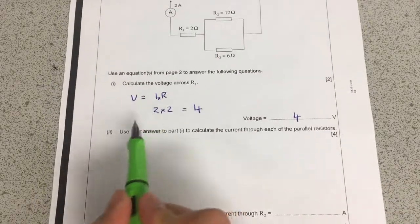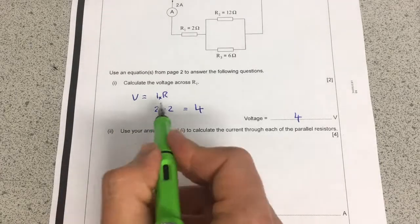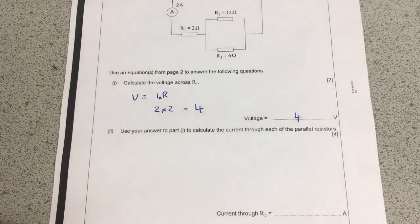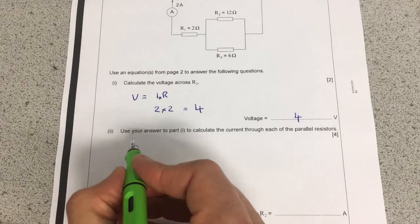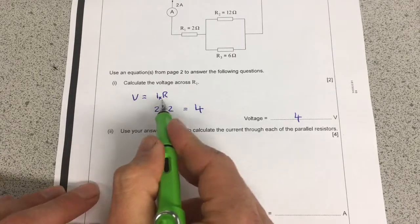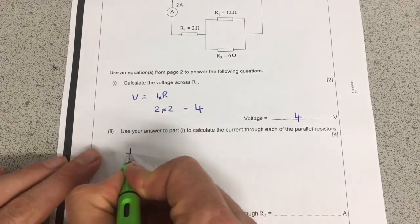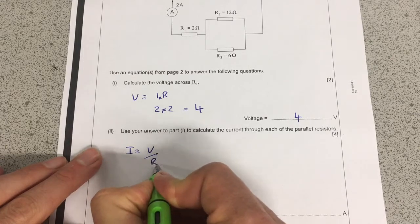So if I reuse this equation again, this time I'll have to rearrange it though, so this is what makes this a higher tier question in particular. Rearrange it to get the current, that's going to be current is equal to voltage divided by resistance.